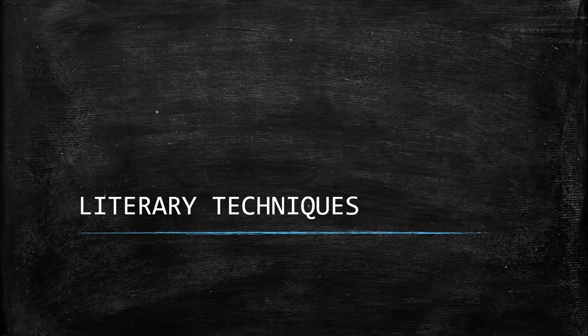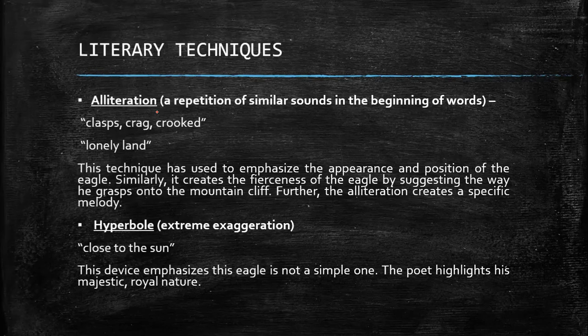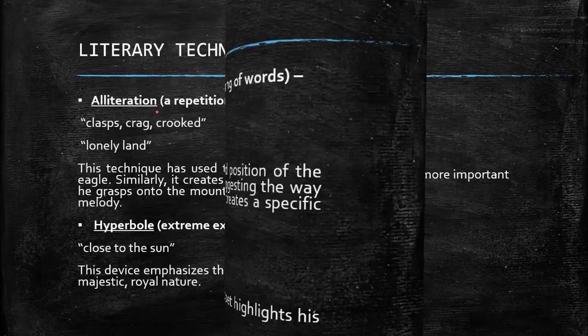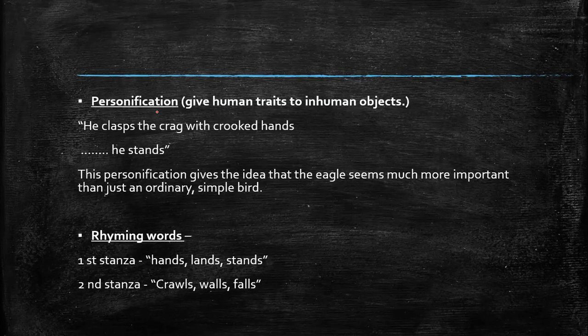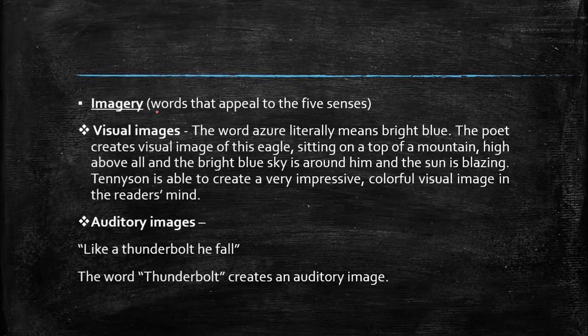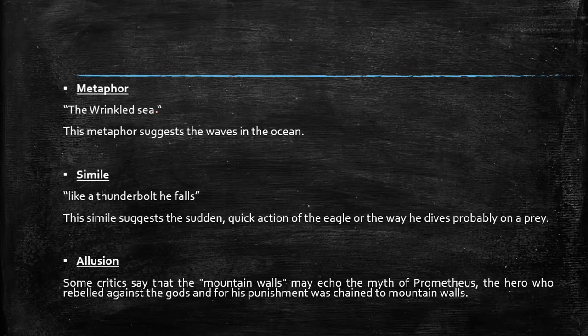Now let's move on to the literary techniques. The poet has included alliteration — the repetition of similar sounds at the beginning of words — as well as hyperbole, personification, rhyming words, imagery (both visual imagery and auditory imagery), metaphor, simile, and allusion. These are the techniques used in our poem, The Eagle.